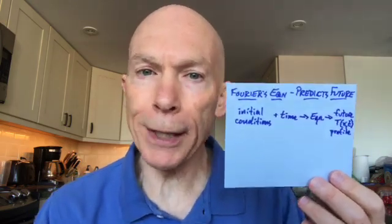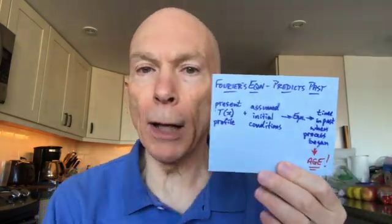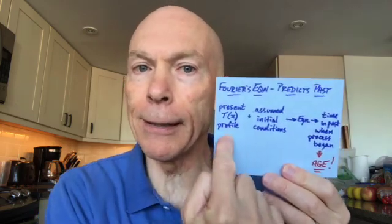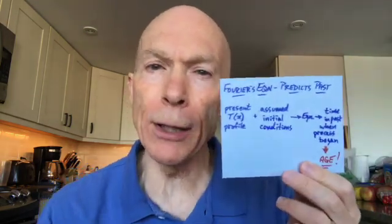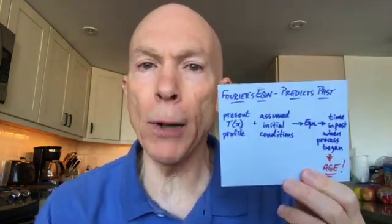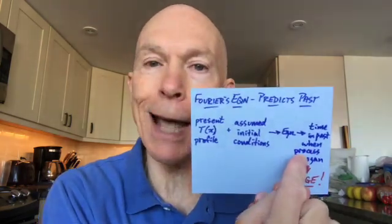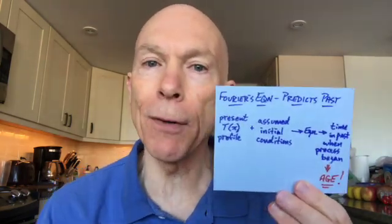But you can also predict the past, and that's where it gets fascinating. You put in a profile of an existing sphere or object that you're looking at, or an existing temperature profile. You assume what the conditions were at the beginning of the whole process, put it through his equation, and then you can predict the time in the past when the project or process began. And that will tell you the age of the process.